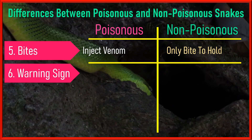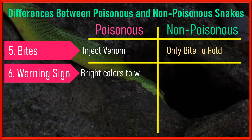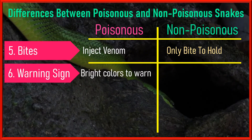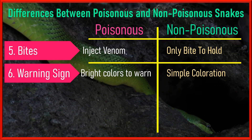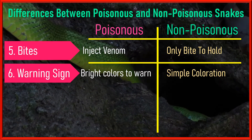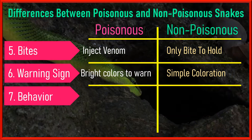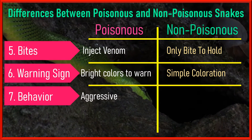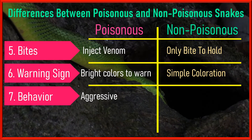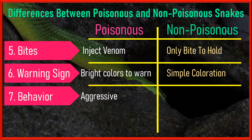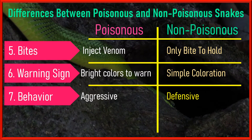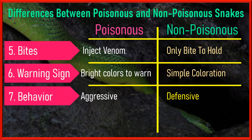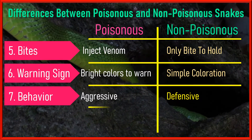Sixth, warning signs: as described earlier, venomous snakes have bright coloration while non-venomous snakes have normal body colors. Seventh, behavior: venomous snakes are aggressive and tend to attack. Non-venomous snakes are defensive and run away, but will attack or bite if disturbed.